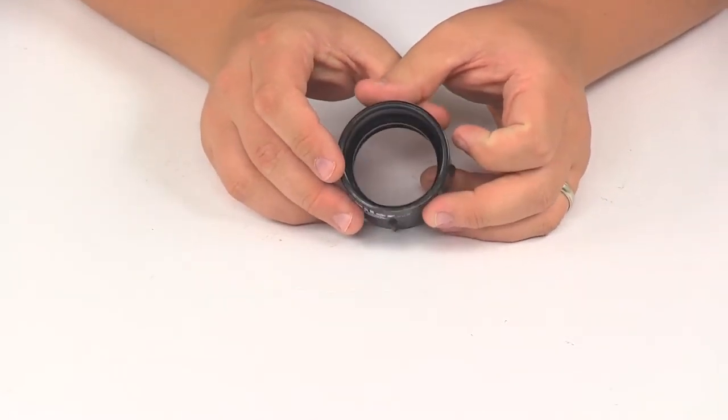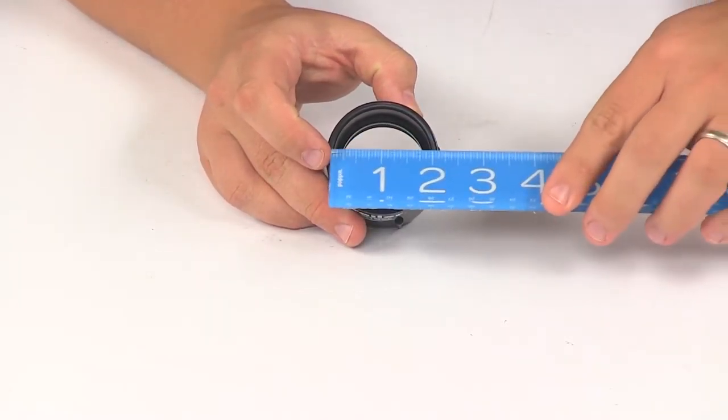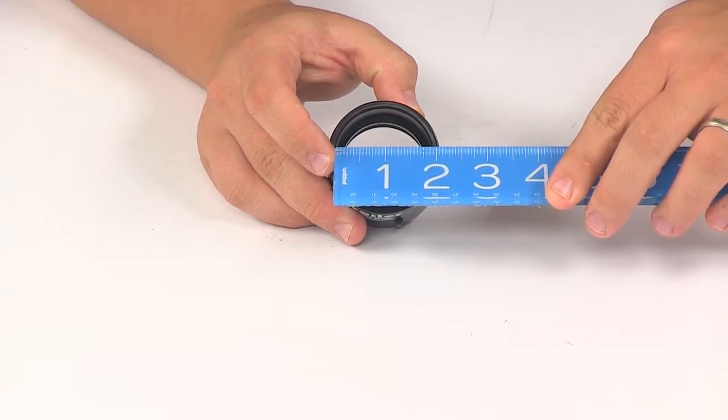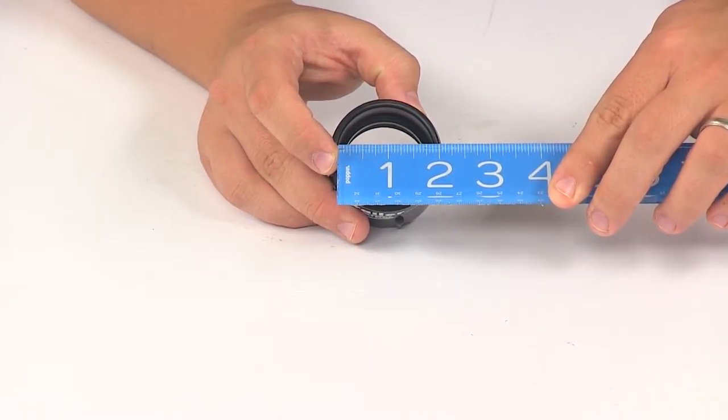The inner diameter on this side is going to give us a measurement of right around one and seven-eighths to one and fifteen-sixteenths of an inch right in that area.